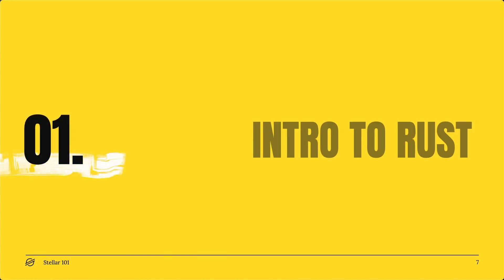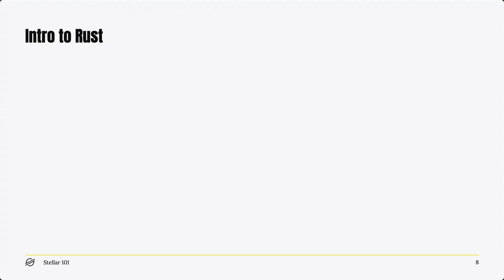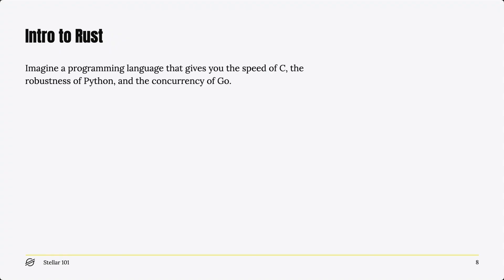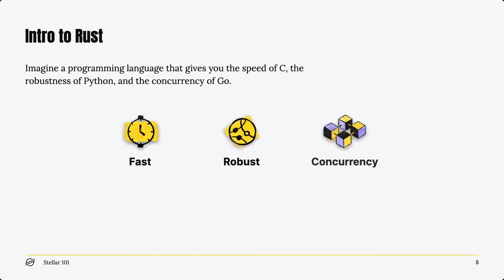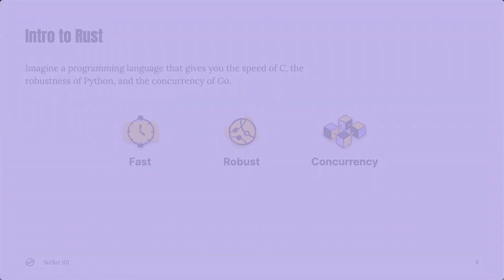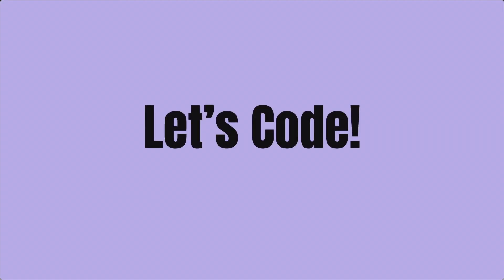First off, let's talk about Rust, the language used to write Soroban smart contracts. Rust combines the power and precision of low-level languages with the developer velocity of high-level ones. Rust is super fast and reliable. It helps you avoid memory management issues that are common in C, and it helps you write multi-threaded programs that are readable, maintainable, and crash-free. Okay, let's take a look at Rust in action.